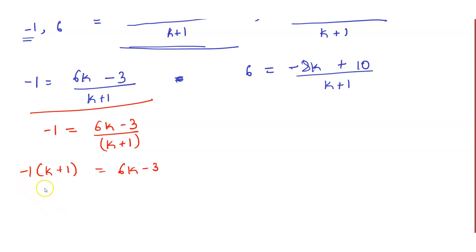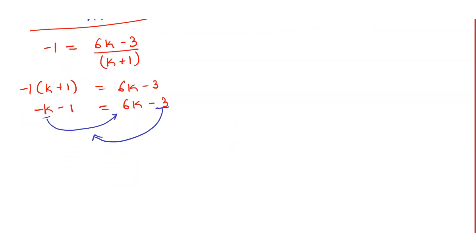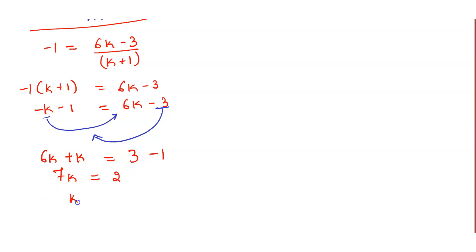So -1 = 6k - 3, bringing k to the left side: -k - 1 = 6k - 3. Rearranging: 6k + k = 3 - 1, so 7k = 2. Therefore k = 2/7.